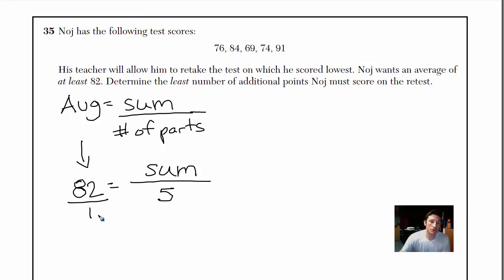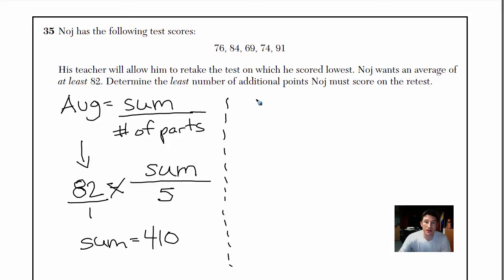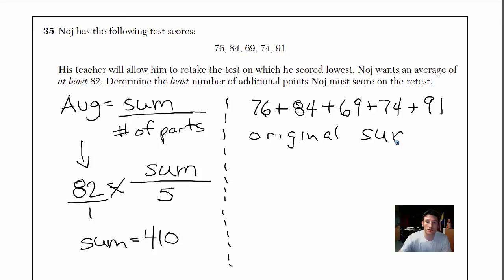To solve this, I'm going to put that over one and cross multiply. 82 times 5 is 410, so the sum has to equal 410. After the retest, all his scores have to add up to 410. Now let's look at the original scores: 76 plus 84 plus 69 plus 74 plus 91. The original sum equals 394.